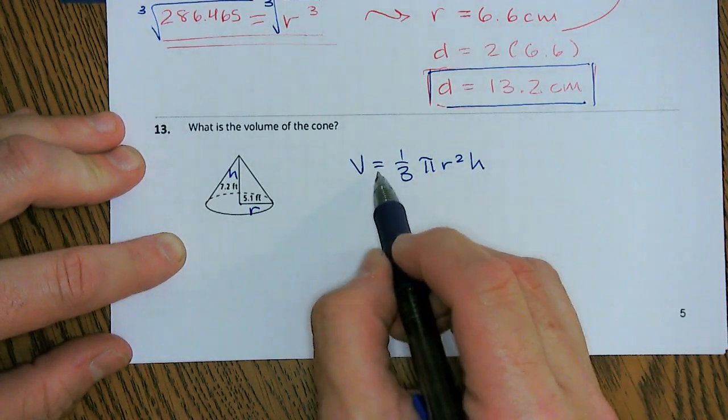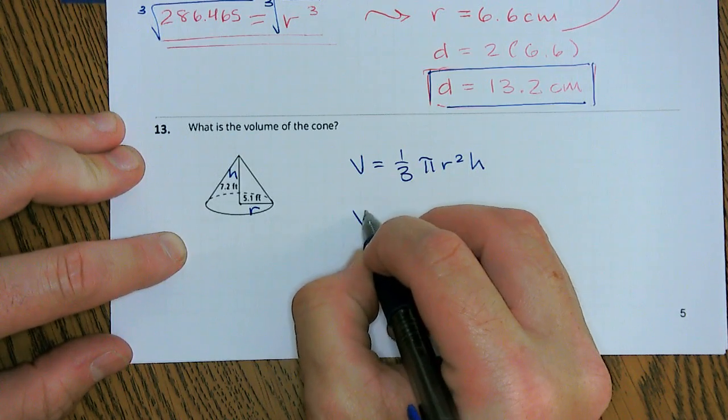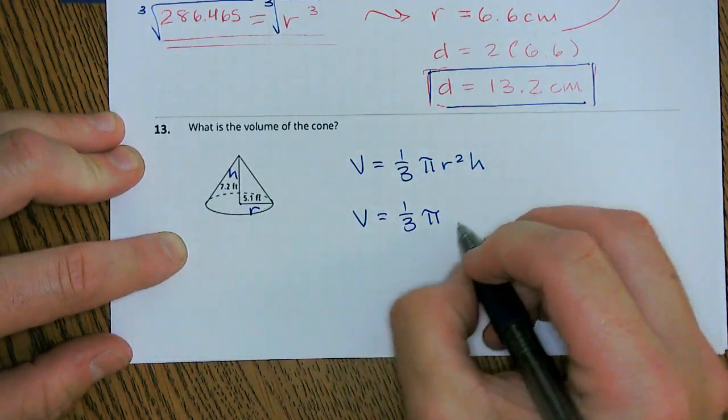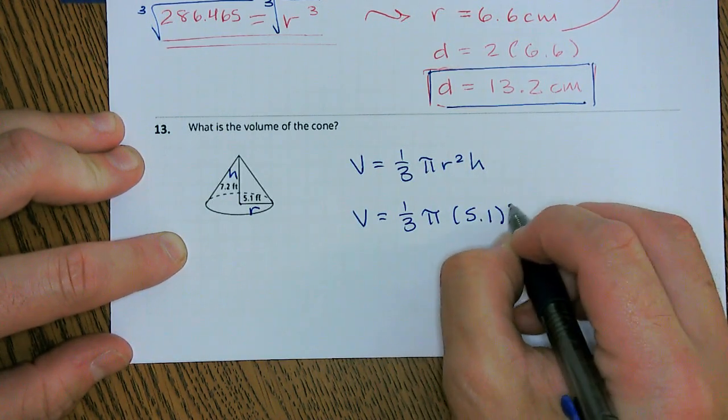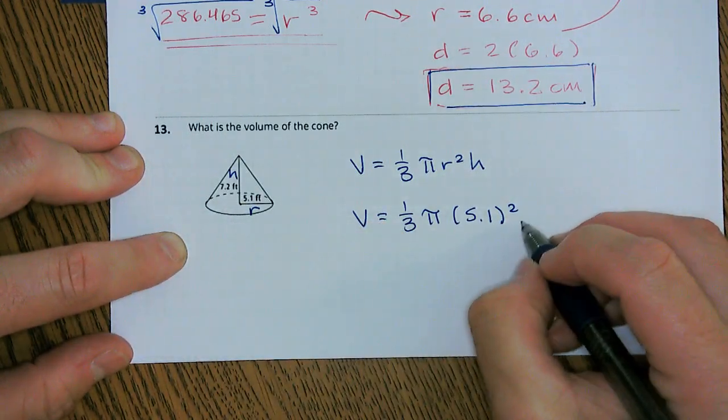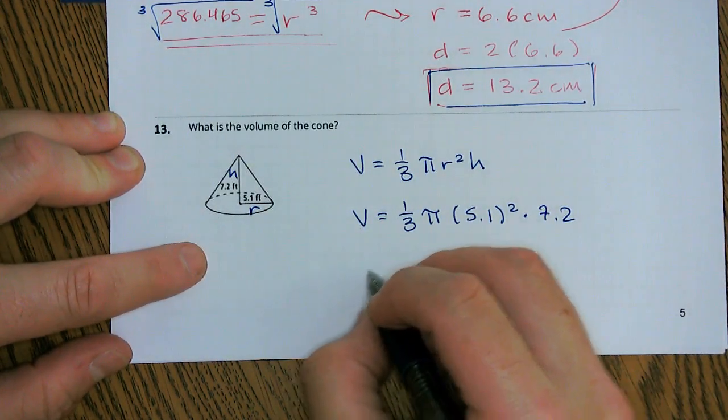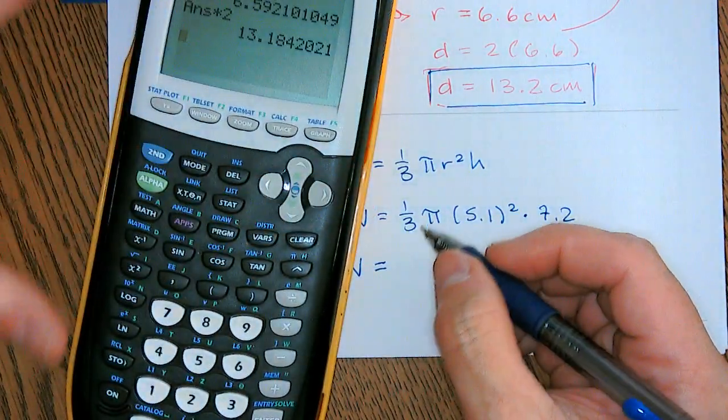So all we have to do is plug that in. We'll be able to find our volume. So our volume is one-third pi. Our radius was that 5.1 squared. And then we're going to multiply that by that 7.2 for the height. All right. So let's put this in our calculator here.